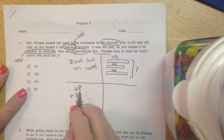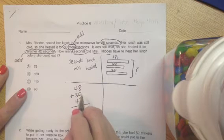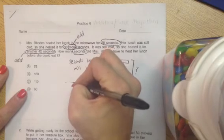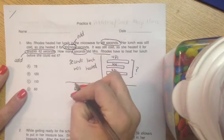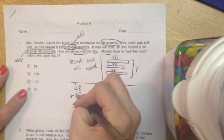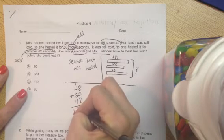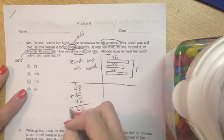We're going to go ahead and start in our ones column. 8 plus 0 is 8, plus 2 is 10. Put a 0 here. We're going to carry our 1. 4 plus 1 is 5, plus 3 is 8, plus 4 is 12. And we put our 12 down here. So our answer is 120.